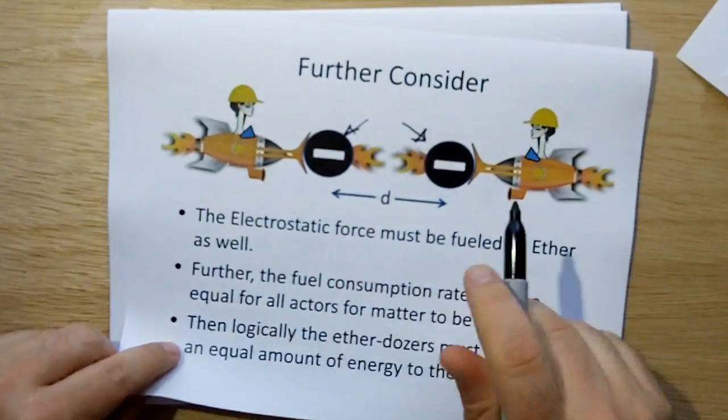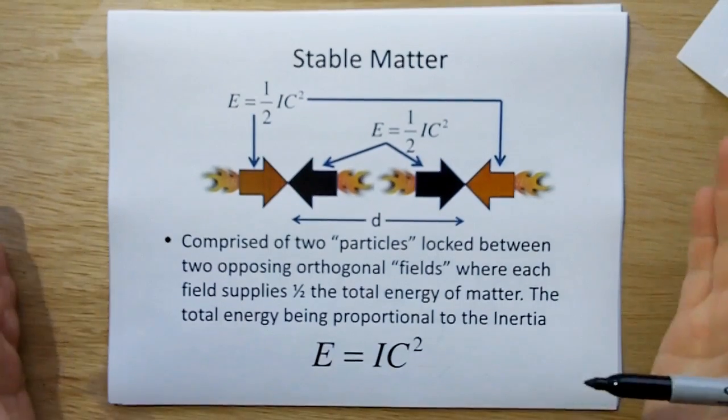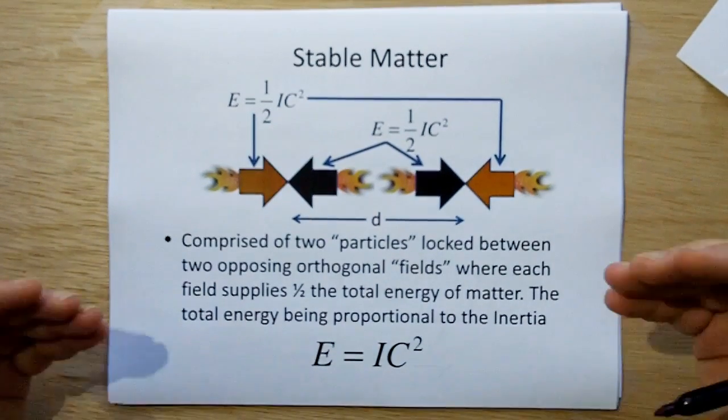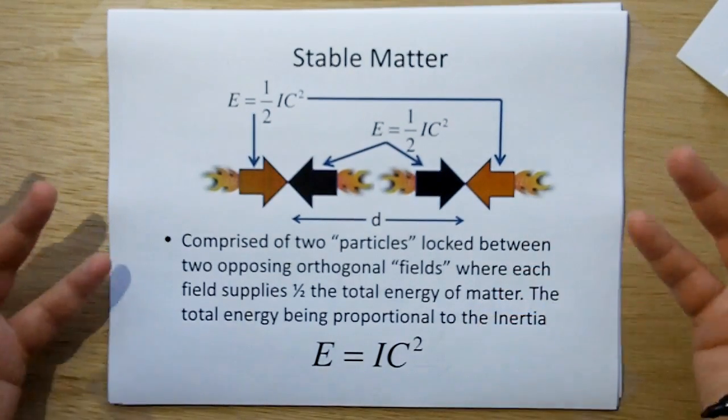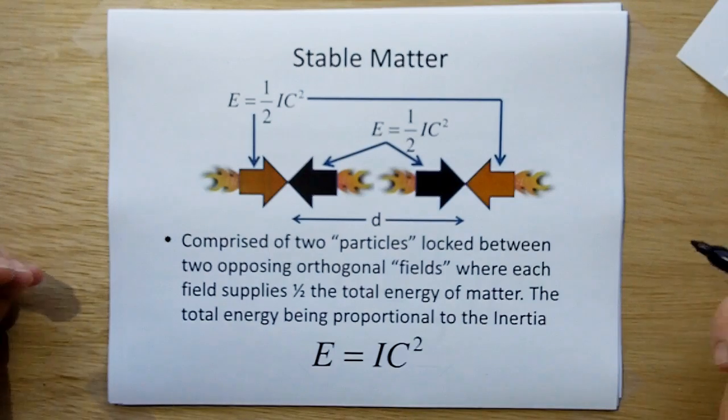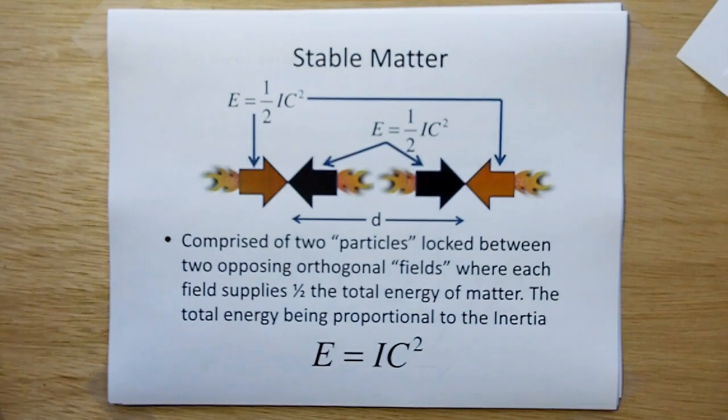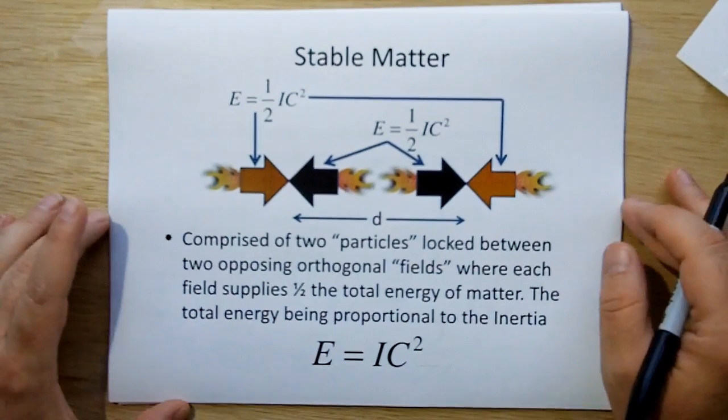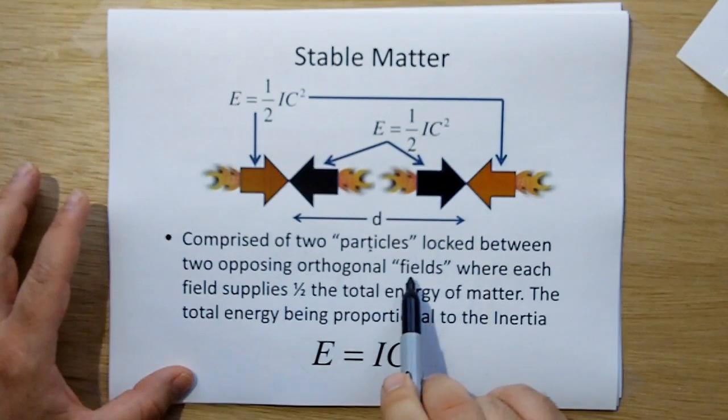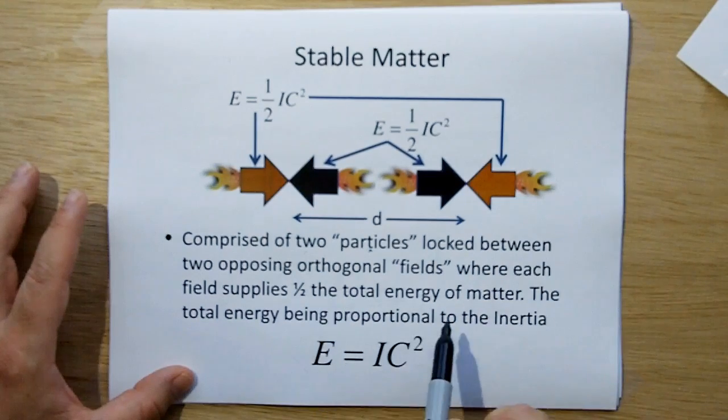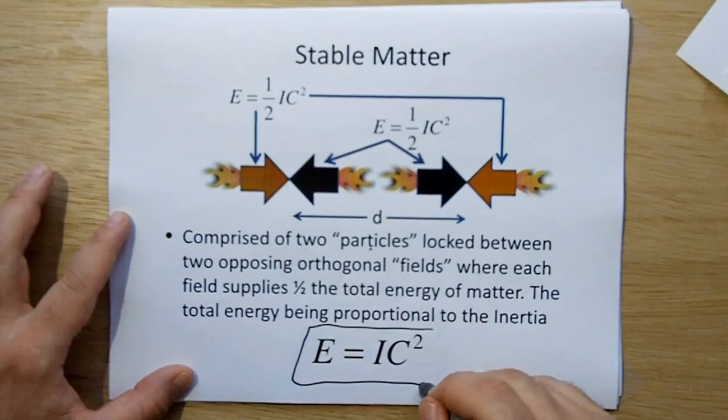And so what are the ether dozers? Well in this case, they're another force of nature, which we're going to discuss, it's going to be the magnetic force obviously, or the components of what we call the magnetic force. We're going to get to that later. The reason why I abstracted this, is I didn't want to get into the discussion of pre-tonic fields at this point. I just wanted to make the simple abstract analogy between ether consumption and matter. Okay, so what we have of our stable matter is comprised of two particles, locked between two opposing orthogonal fields, where each field supplies half the total energy of matter. The total energy is now proportional to E equals IC squared.